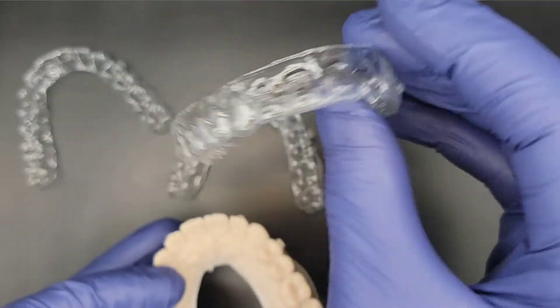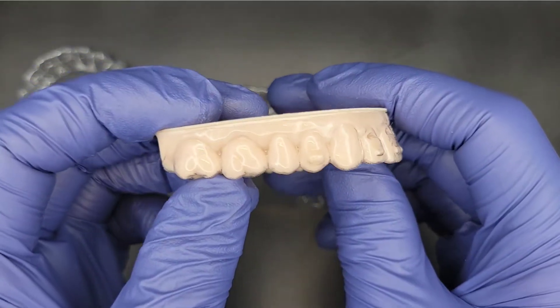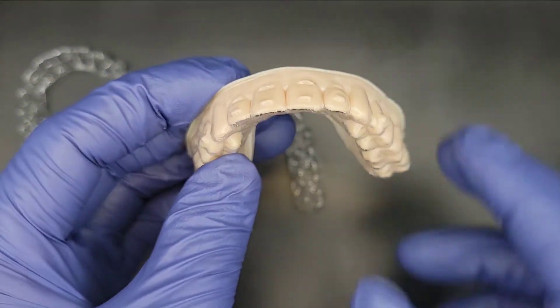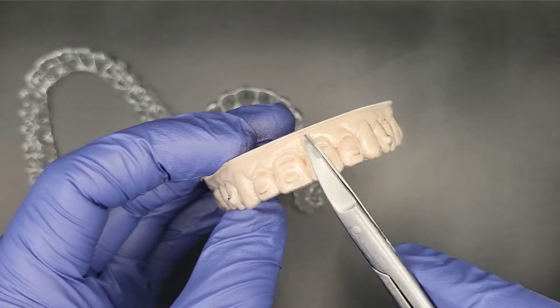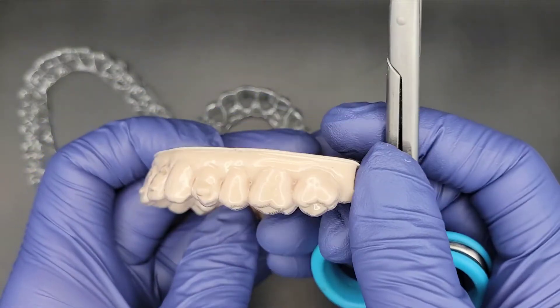Next, let's look at this one. This one hasn't been trimmed enough. As you can see, the aligner cut is very high over the gums. This can interfere with the patient's frenum, and the aligner won't fit properly.